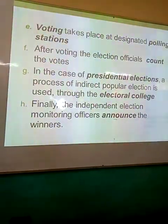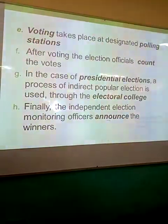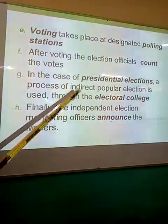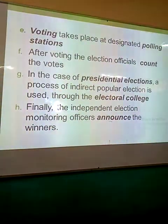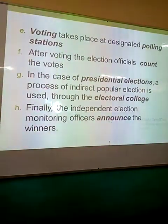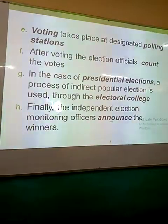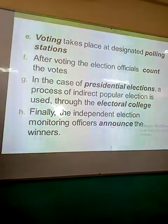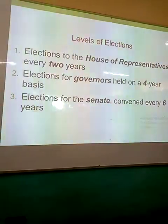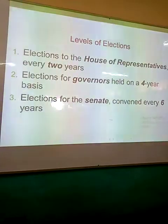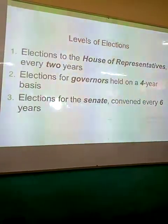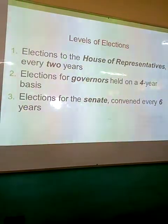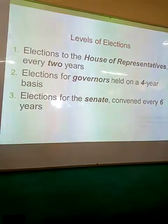Continuing with the U.S. — voting takes place at designated polling stations, and after voting, election officials count the votes. In the case of presidential elections, a method called the electoral college system is used where states are allocated a number of college votes, and a winning president must gather at least 270 college votes to be declared president. There are two-year elections done for the House of Representatives, governors are elected for a four-year term, and senators go for six years.